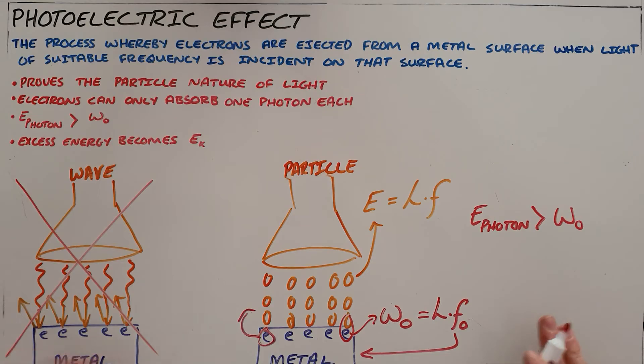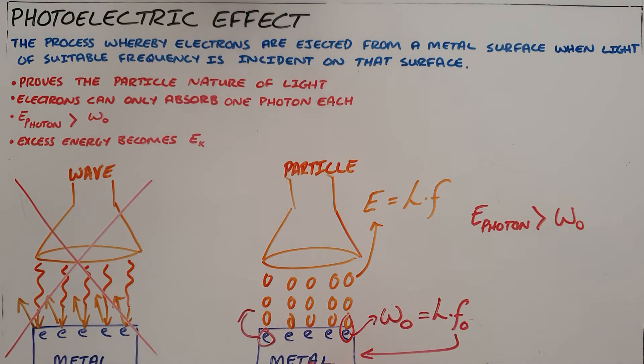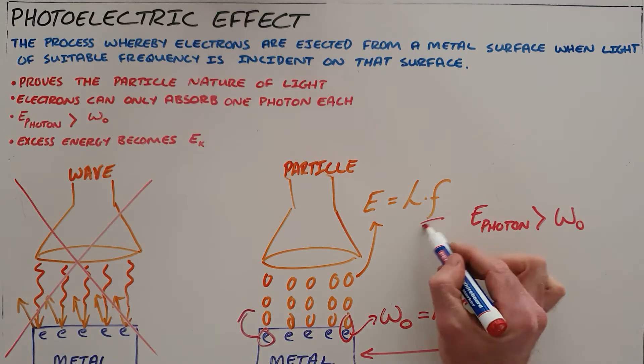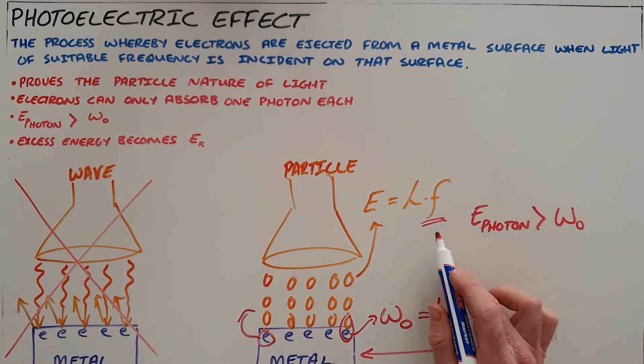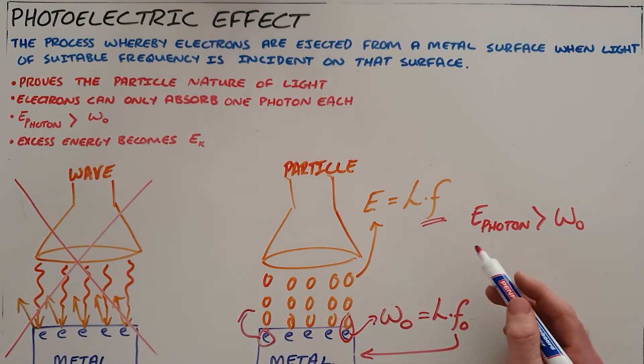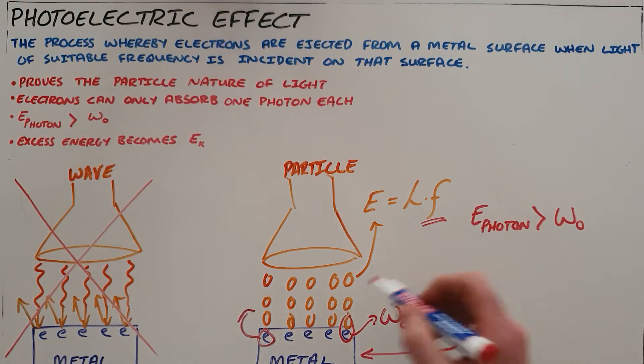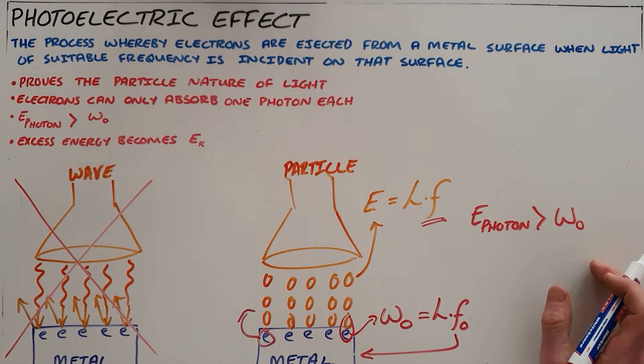Now with this explanation we find that it makes sense why not all light sources are able to create the photoelectric effect, and that is because they do not necessarily have light of a high enough frequency. And it also explains to us how we can determine how many electrons are able to escape from the surface of that metal.